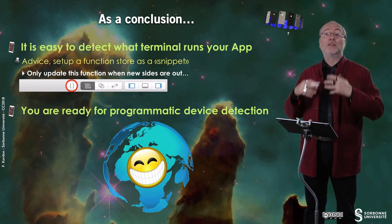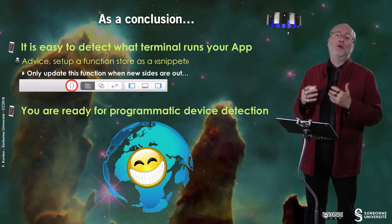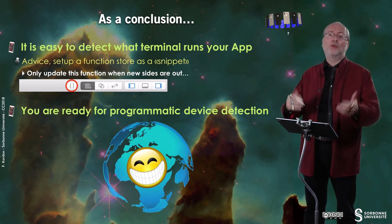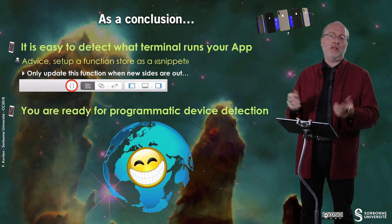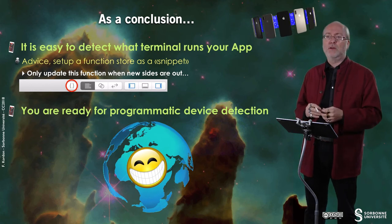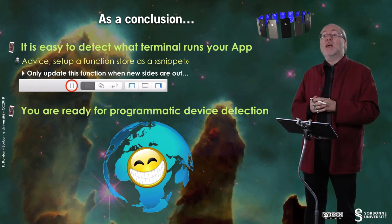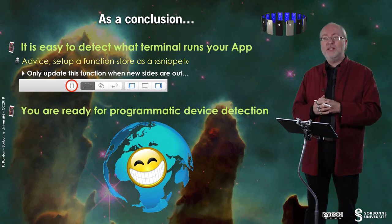You can add your own code snippets to Xcode — typically your own utility code, like device detection functions — because you will be regularly using these across various applications. At this stage, you are ready for programmatic device detection. Thank you very much for your attention, see you later.